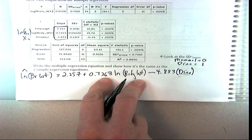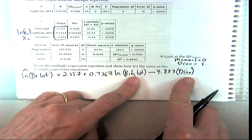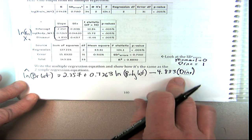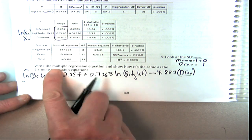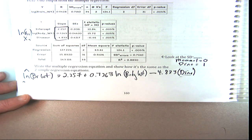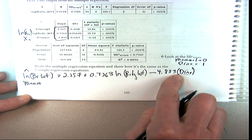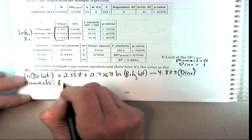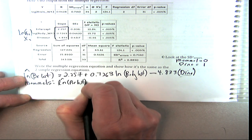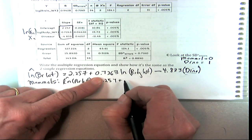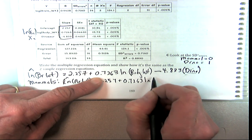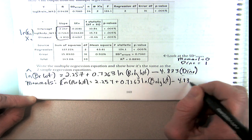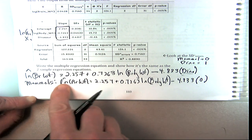We force the same slope — we haven't done an interaction. Otherwise we'd add a body weight times dino interaction term to get a better real slope. But this is good enough. So the multiple equation is the same as the two simple equations. For mammals, the predicted log of brain weight equals 2.257 plus 0.7263 times the log of body weight, minus 4.833 times 0, because they're mammals. So there's our equation — just that.